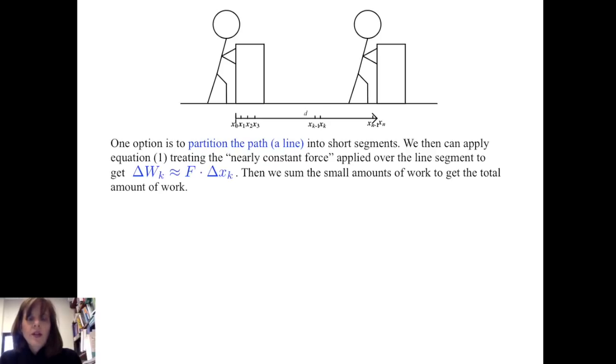We have ΔWₖ approximately equal to F · Δxₖ, which is the small amount of distance along the linear path. We then sum the small amounts of work to get the total amount of work done.